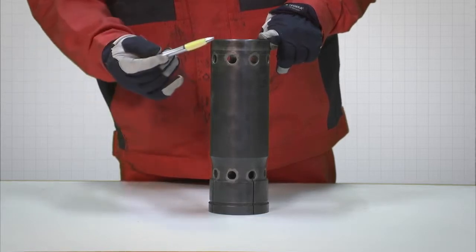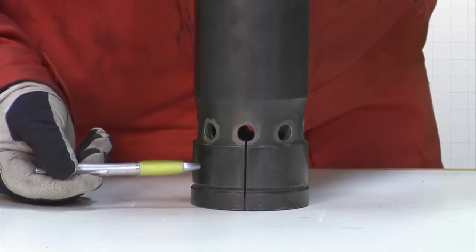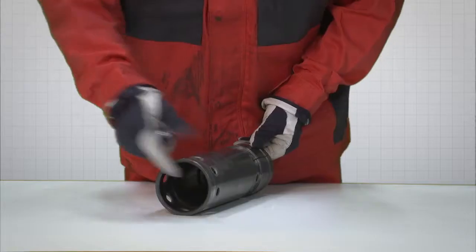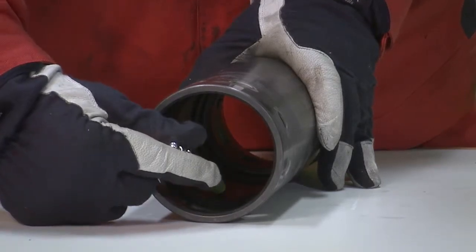When inspecting the outside of the inner cylinder, focus on both end areas. That also applies for the inside. Be sure to check also the deeper parts of the bearing area.